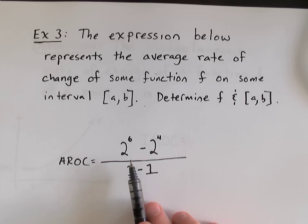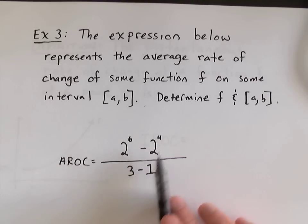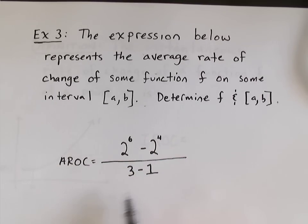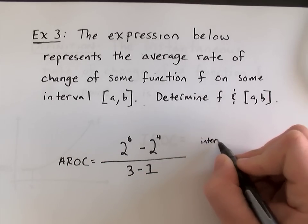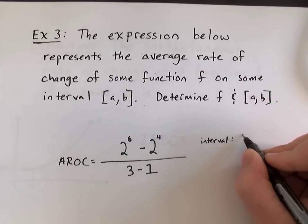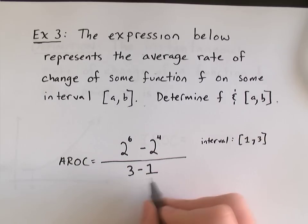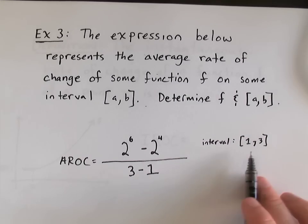You might think at first that the function is 2 to the x. Because I see 2 to the 6th and 2 to the 4th. Well, that would mean my interval was from 4 to 6. And that doesn't match with what I see in the denominator. Instead, I think the interval must be from 1 to 3. Because you can see that very clearly in the denominator there. b minus a, 1, 3.